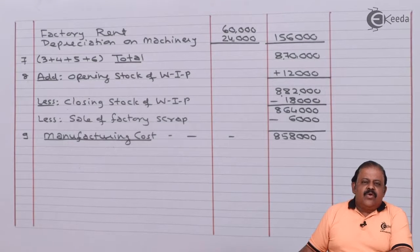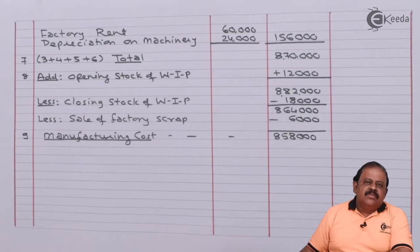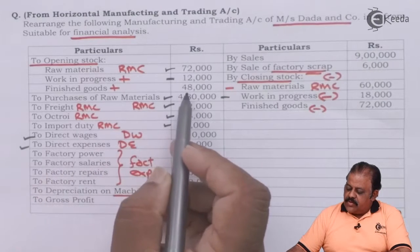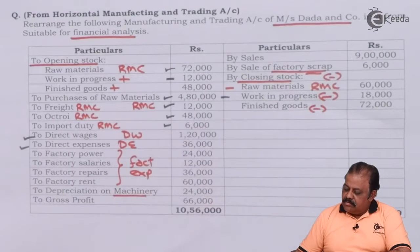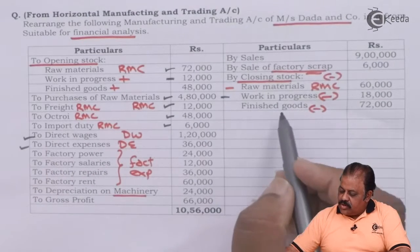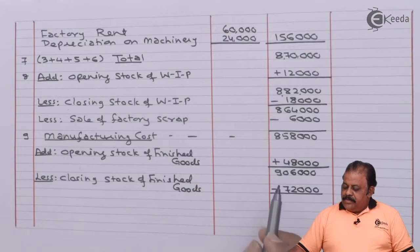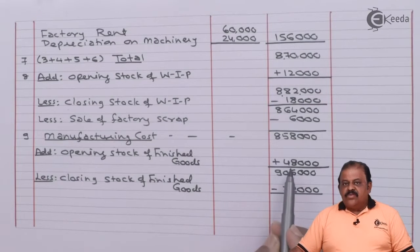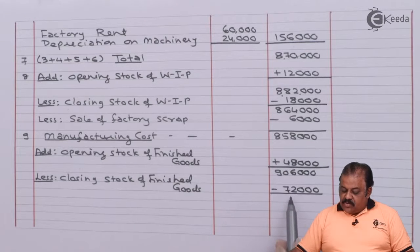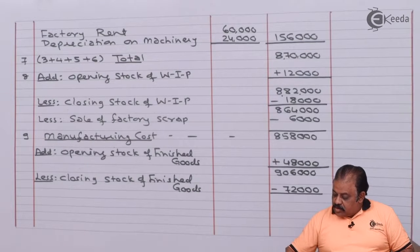To the cost of production we add opening stock of finished goods and deduct closing stock of finished goods to arrive at cost of goods sold. Opening stock of finished goods: 48,000 added; closing stock of finished goods: 72,000 deducted. We get cost of goods sold of 8,34,000.